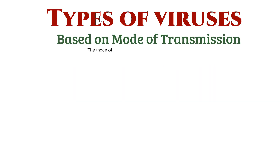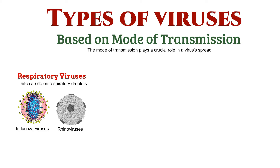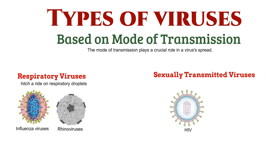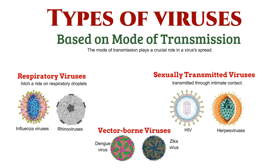The mode of transmission plays a crucial role in a virus's spread. Respiratory viruses, like influenza viruses and rhinoviruses, hitch a ride on respiratory droplets. Others, like HIV and herpes simplex virus, are transmitted through intimate contact. Vector-borne viruses, such as dengue virus and Zika virus, rely on vectors like mosquitoes for transmission.